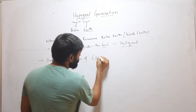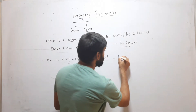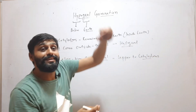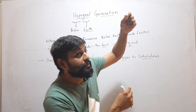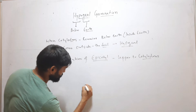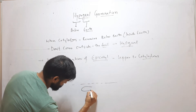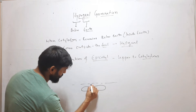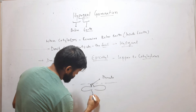Hypogeal germination occurs due to elongation of the epicotyl. The epicotyl is the region present above the two cotyledons. When it elongates, only the plumule will come out, and the cotyledons will remain inside the soil.